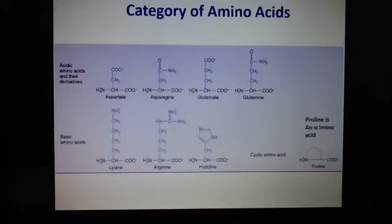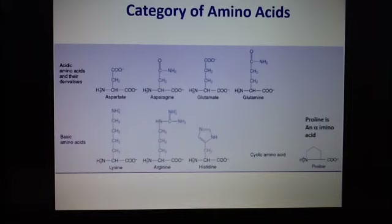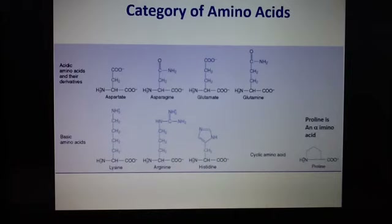Looking at the cyclic amino acids, for example proline — proline is an alpha amino acid and plays an important role in the conformation of proteins. The reason it's important is that it can allow the protein chain to make a curve or a kink, helping the amino acid to change direction. It's important to understand how these amino acid categories give each amino acid its characteristics.